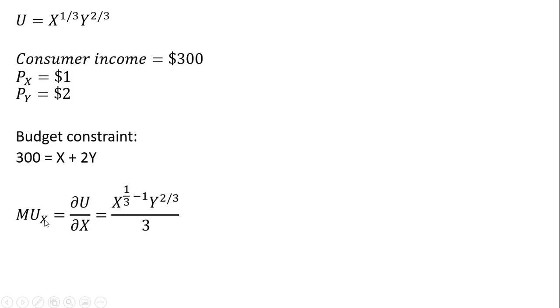Next, using calculus, we get the marginal utility of good X and the marginal utility of good Y. The marginal utility of good X shows the change in utility from consuming one more unit of good X. It's the partial derivative of the utility function with respect to good X. We bring down the exponent 1/3 in front — that's where the 1/3 comes from.